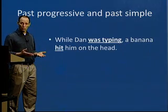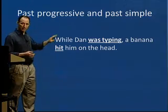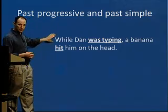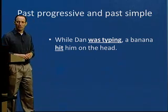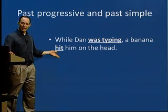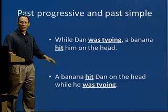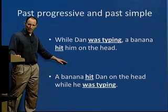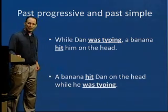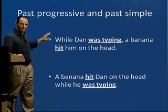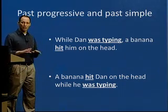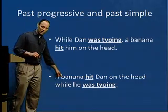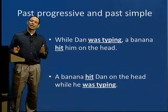I can also use 'while' with the progressive. I use 'while' in time clauses when the verb is in the progressive. So: 'While Dan was typing, a banana hit him on the head.' And: 'A banana hit Dan on the head while he was typing.' Notice the first sentence has the comma; the second sentence has no comma, because the time clause is at the end of the sentence.